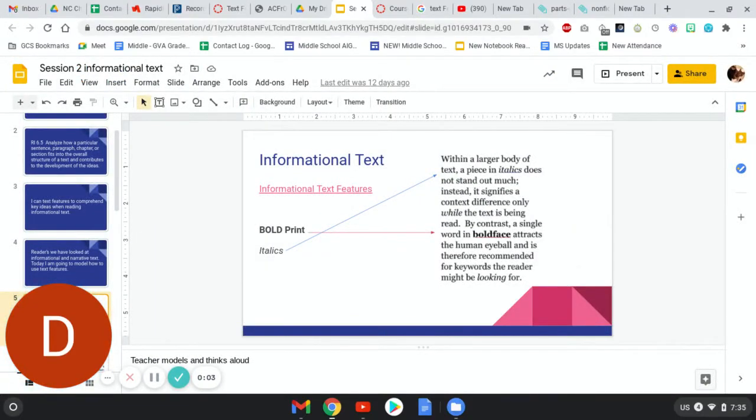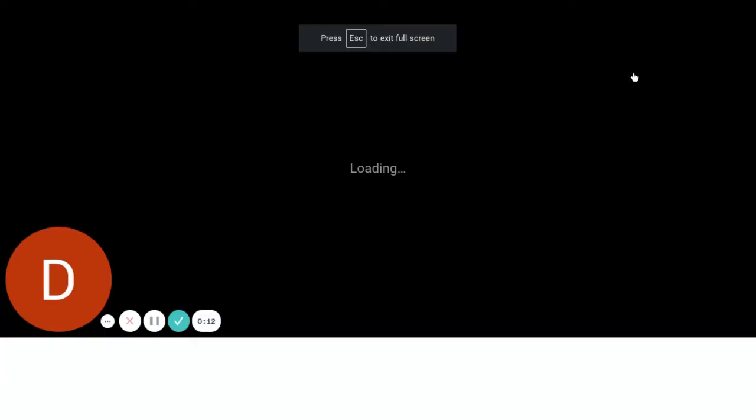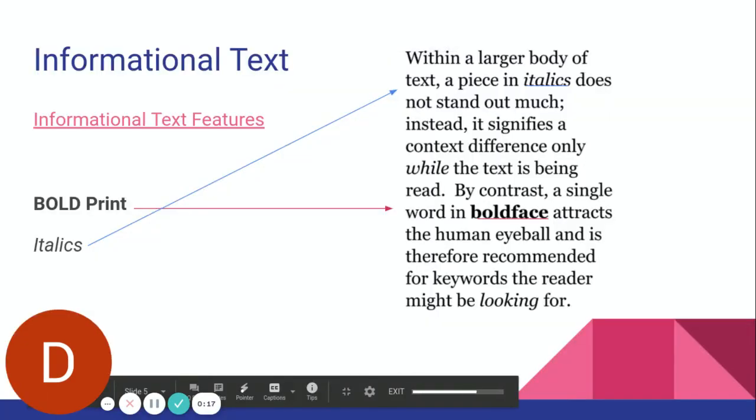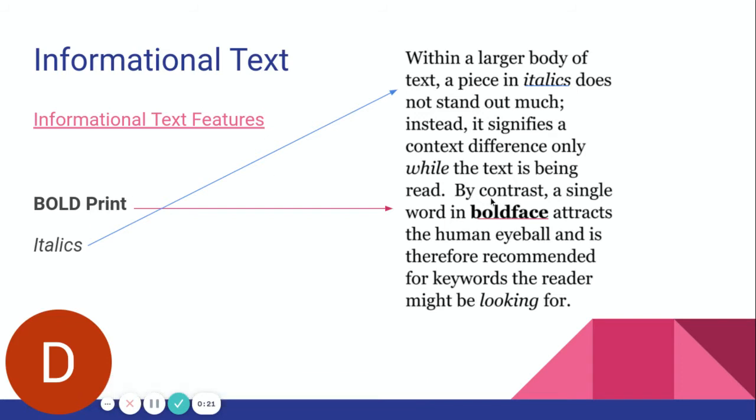Today we're going to look at some text features that you're going to see for informational text. The first ones that you're going to view are things like bold print and italics. Bold print in nonfiction is often used to show you important words.